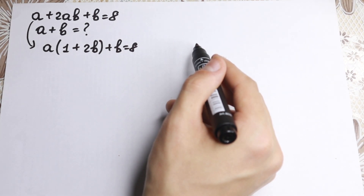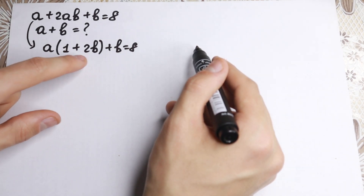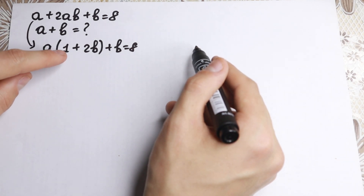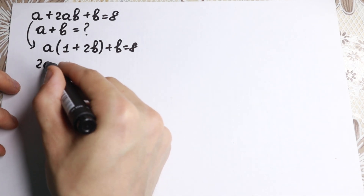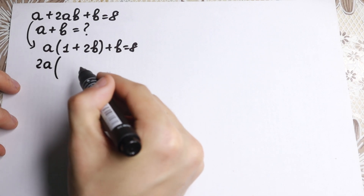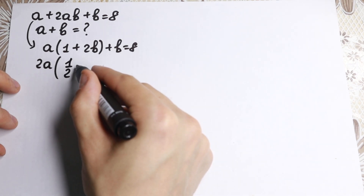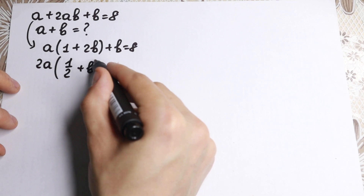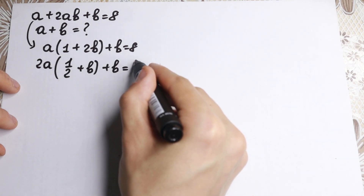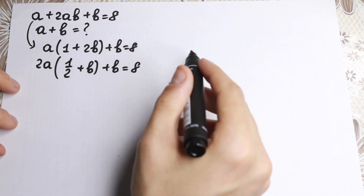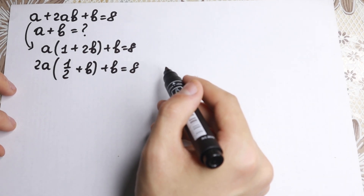What are we going to do next? Let's factor 2 from these parentheses. If we factor 2, we will have 2a right here and in parentheses we will have 1/2 plus b, plus b equal to 8.